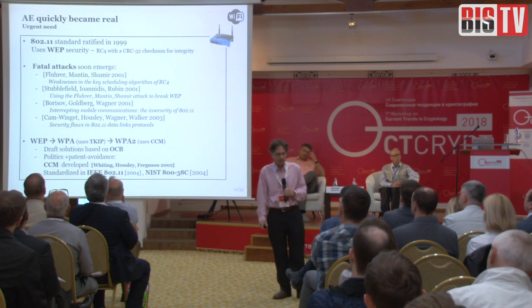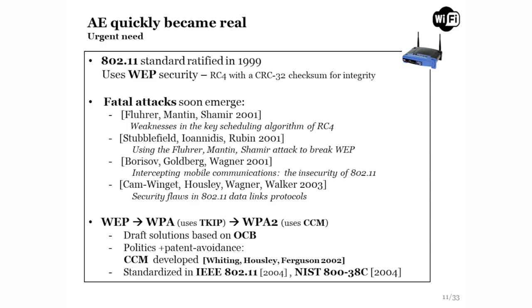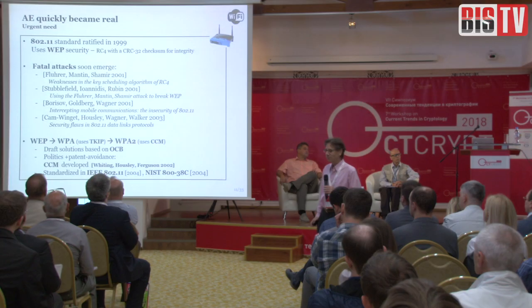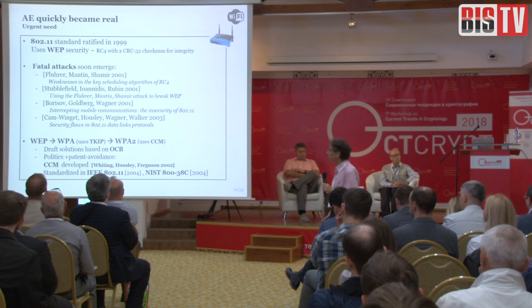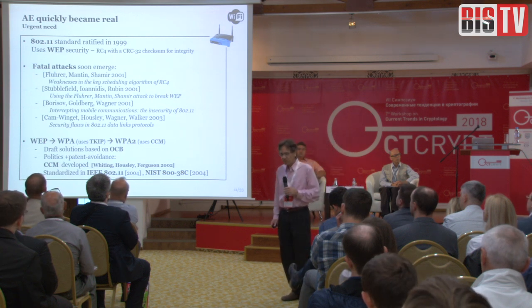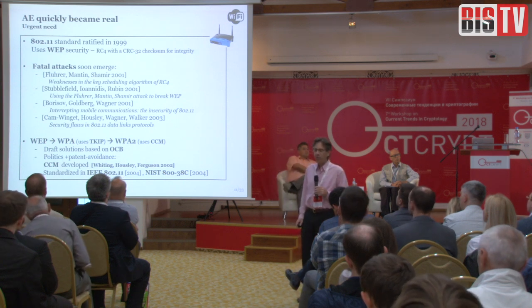Authenticated encryption could have just stayed an academic exercise were it not for a sudden and urgent need. WEP, the 802.11 protocol for providing privacy, was becoming very popular around 1999, but within a year or two, terrible problems in its design were discovered. The protocol didn't provide any of the privacy guarantees it was supposed to deliver — probably because there wasn't really a single cryptographer who had contributed to the protocol's design. After these attacks became publicized, WEP had to be replaced.